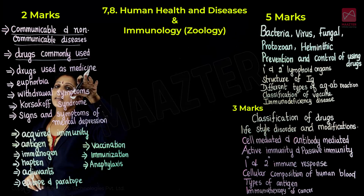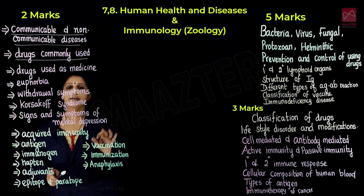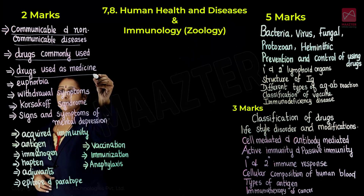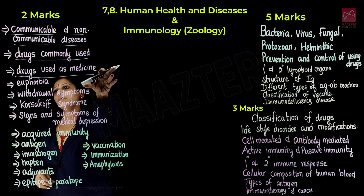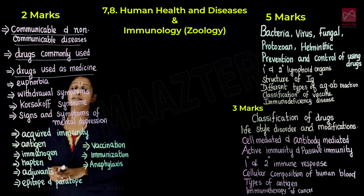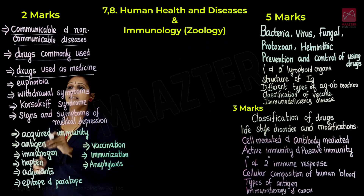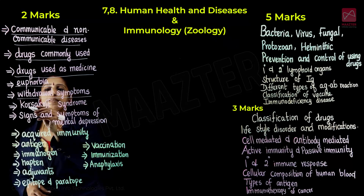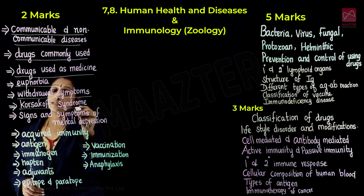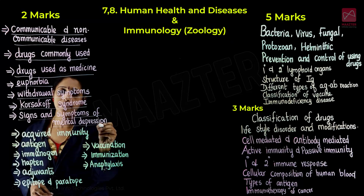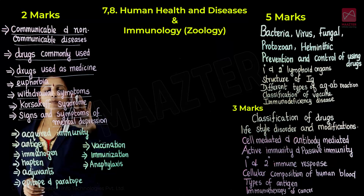Drugs used as medicine — what are the drugs used? Metam, Petamine, Barbiturates — these are the names you need to know. Then the meaning of euphorbia, withdrawal symptoms, Korsakoff syndrome, and signs and symptoms of mental depression. Now we will talk about Human Health and Diseases questions.